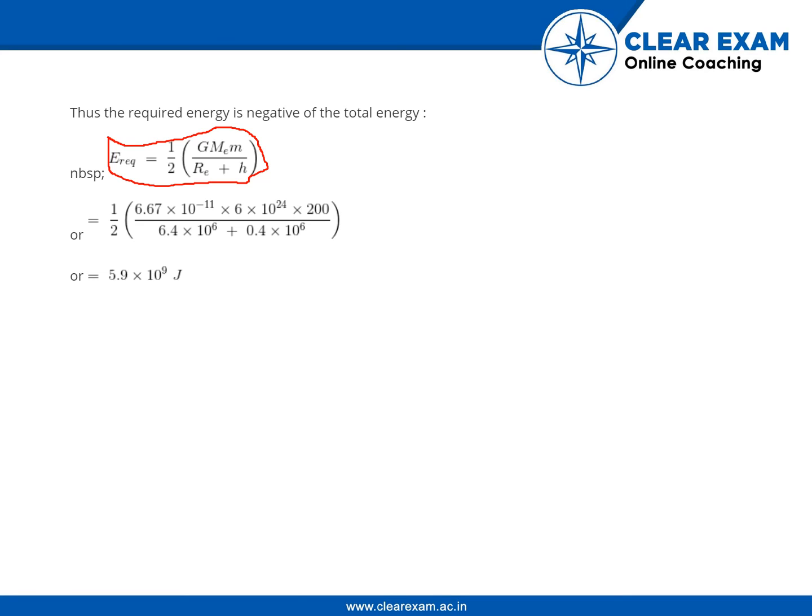Therefore, by calculating all the above values, you'll be getting 5.9 × 10^9 joules.